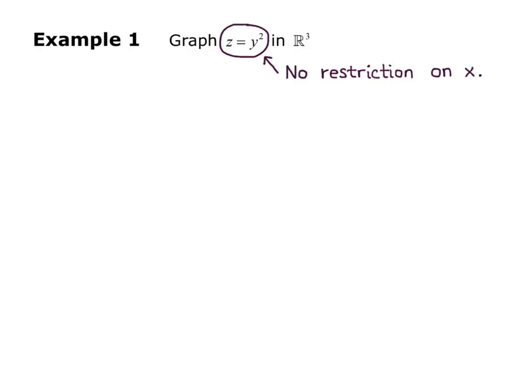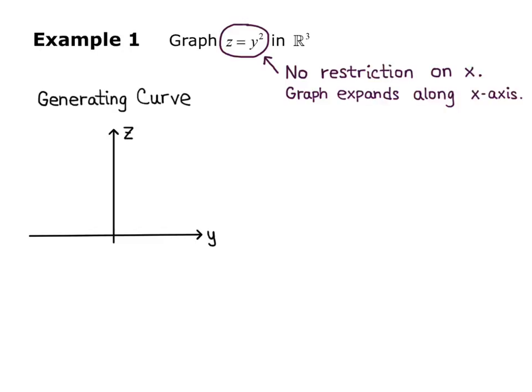What we want to do is start by graphing the generating curve, and then we'll know that the graph expands along the x-axis because there's no restriction on x. Here's our generating curve. We have the YZ axes because those are the two variables present in the equation, and we know that z = y² in two dimensions is a parabola.